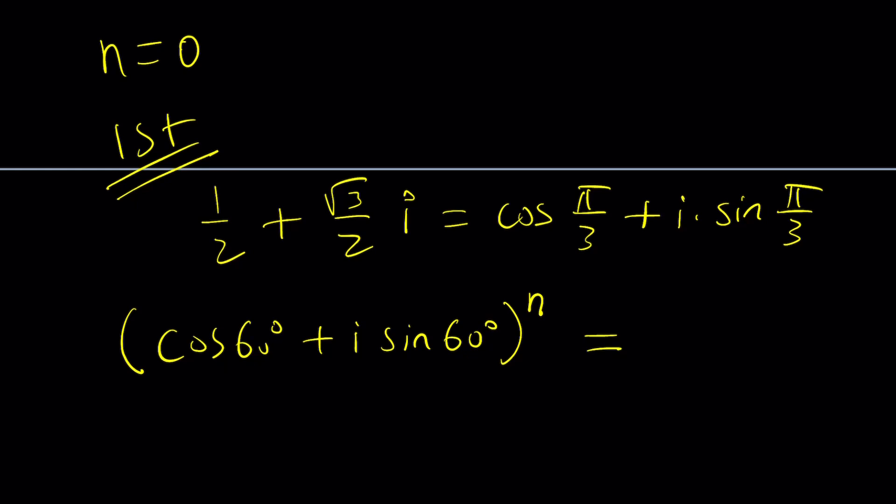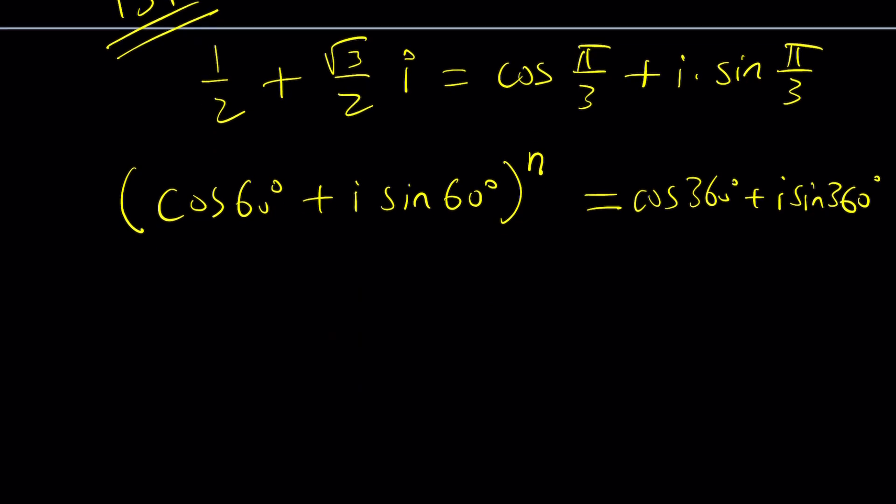But since we want this to be 1, why don't you write 1 as cosine of 2π, or I should probably say cosine of 360 degrees plus i times sine of 360 degrees. Radians are better, but I wanted to work with degrees here first, and then I'll talk about radians. Now, here's what we can get from here. Remember De Moivre's theorem? That's the way I can say it only. Anyways, bear with me.